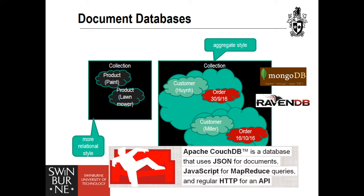If you add another entity with a different structure to the same collection, the database won't complain. Transactions generally cannot span more than one database operation. If you have to update data across two collections, you need two operations, and therefore there is generally no possibility of a transaction when more than one collection is involved.